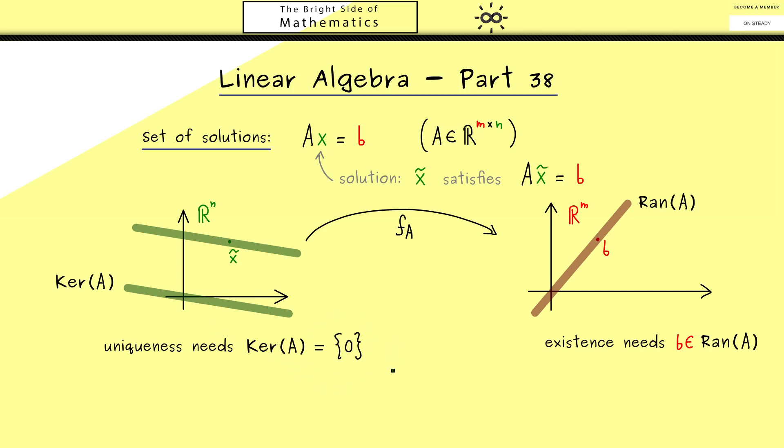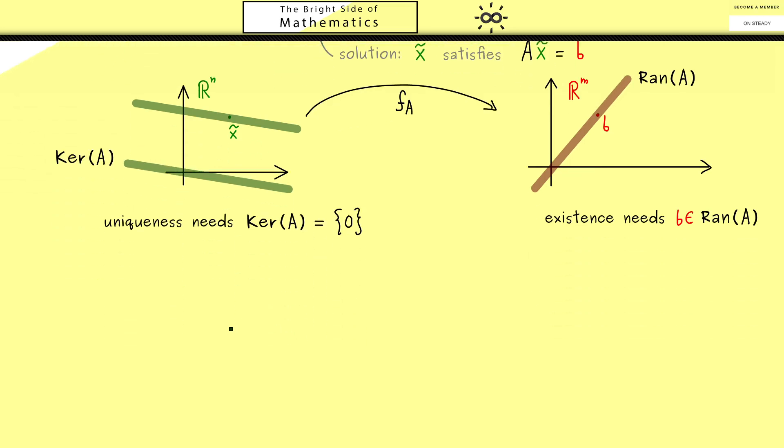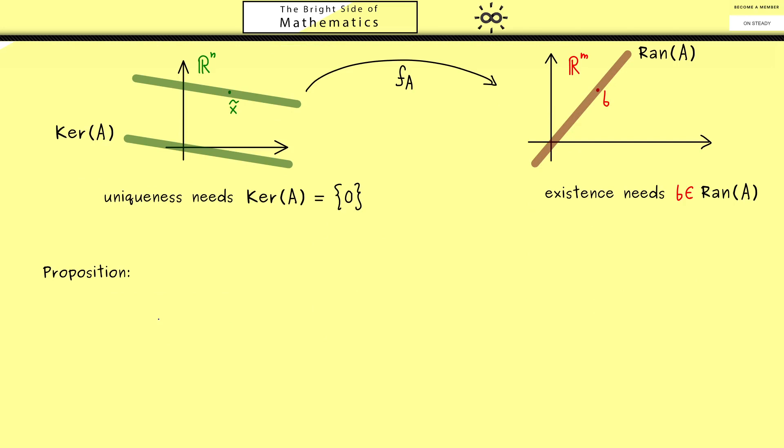With that in mind, let's write down that the set of solutions is indeed an affine subspace. This will be the important proposition of this video today. This is easy to state for a system given as the equation Ax = b. The set of solutions which we will denote by S is a so-called affine subspace. Maybe you remember this term from part 6, it's just a shifted linear subspace.